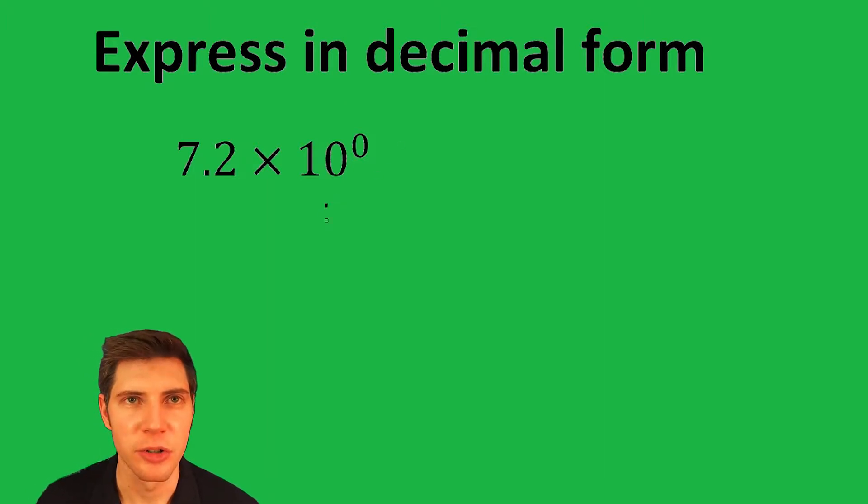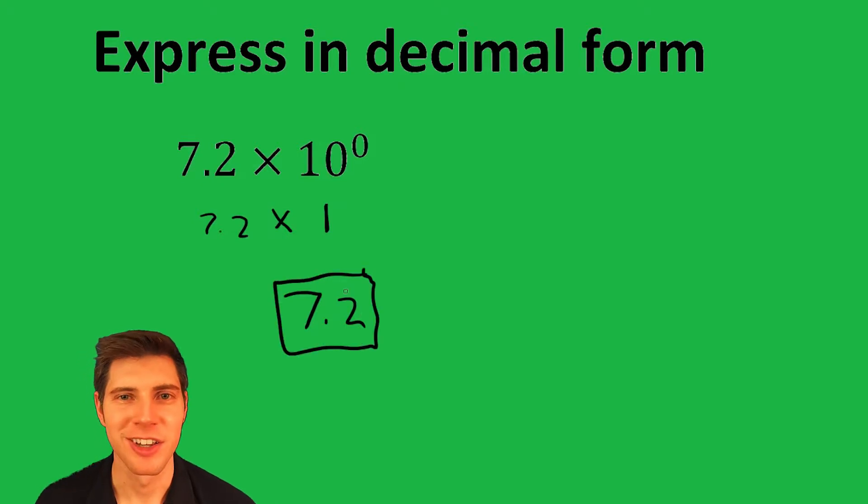So 10 to the 0, anything to the 0 is just 1, and 7.2 times 1 is 7.2, and that's the answer to the question.